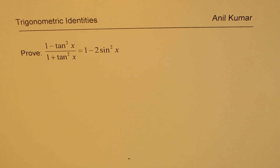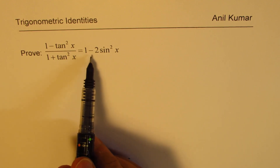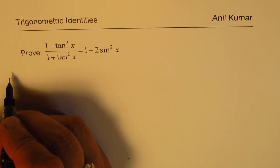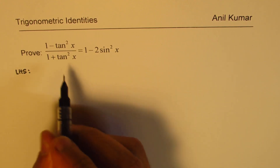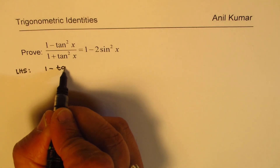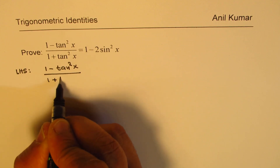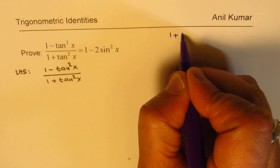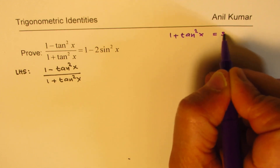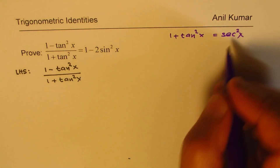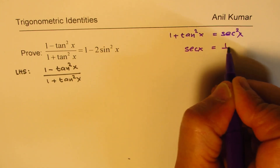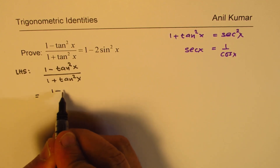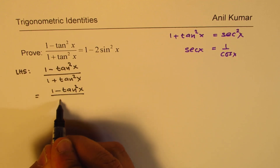Now let's prove: (1 minus tan squared x) divided by (1 plus tan squared x) equals 1 minus 2 sine squared x. Remember, there are many ways to prove identities, so a different solution may also be correct. Starting with the left-hand side: 1 plus tan squared x equals secant squared x, so we replace the denominator with secant squared x. Since secant x equals 1 over cosine x, this helps simplify.